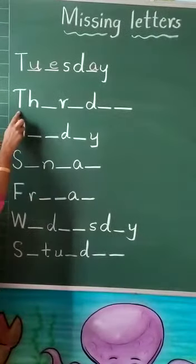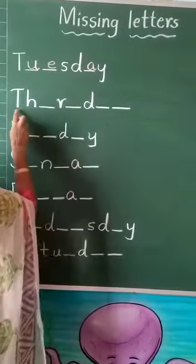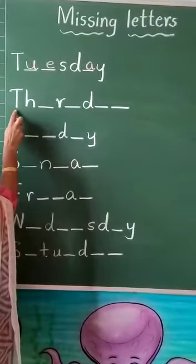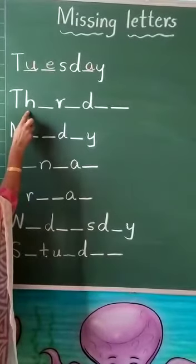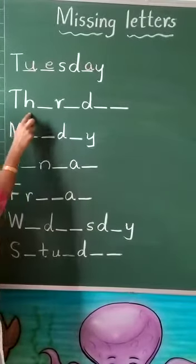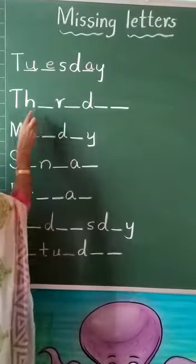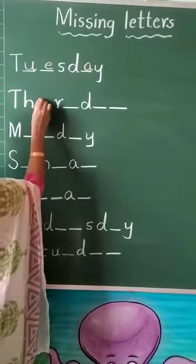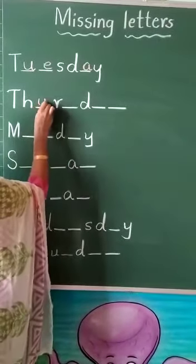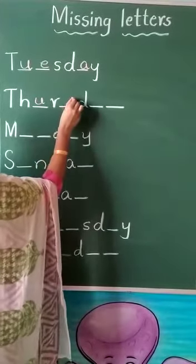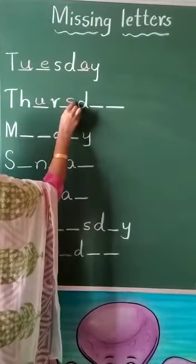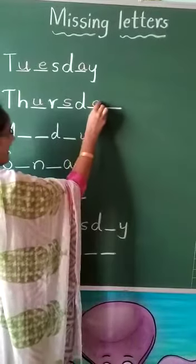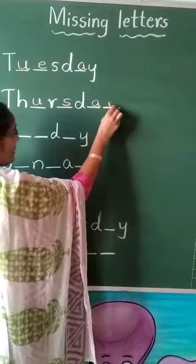Next one: which spelling is it? First you have to identify the spelling. T and H are given — this is Thursday spelling. What is the Thursday spelling? T-H-U-R is given, and here we have to write S-D-A-Y.